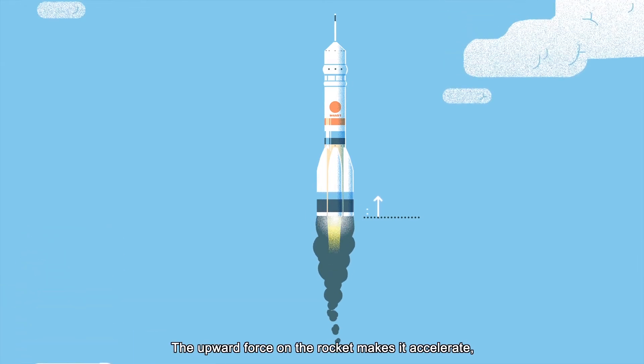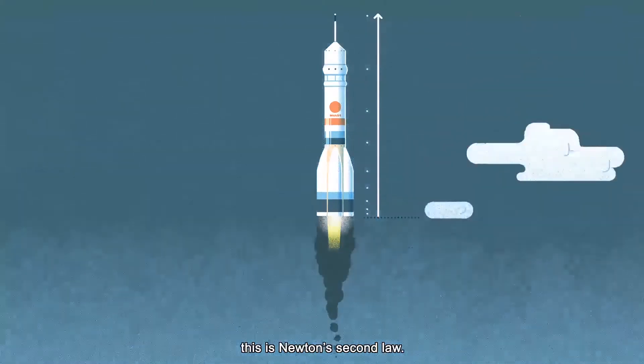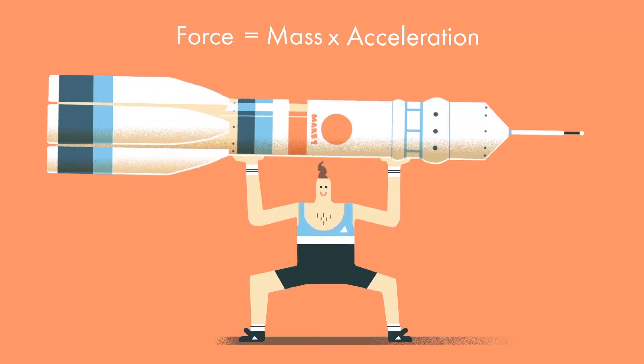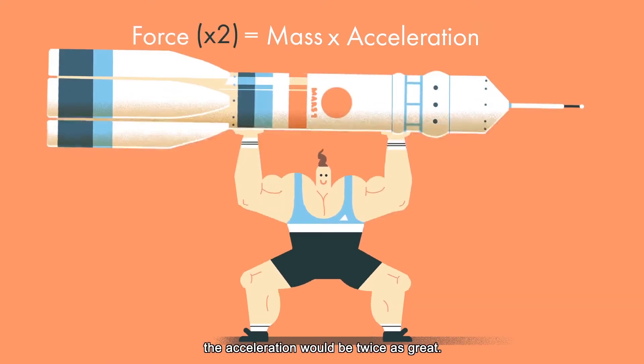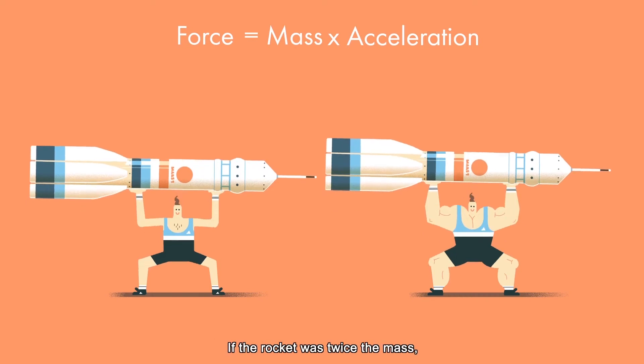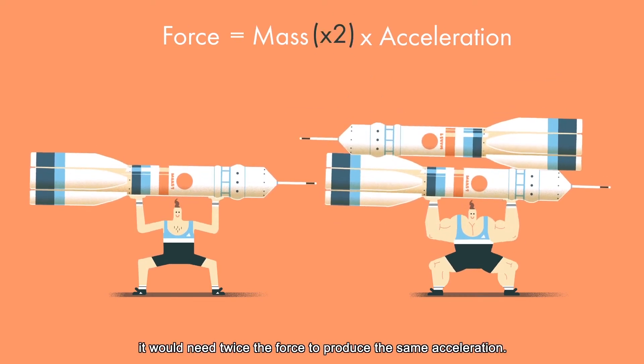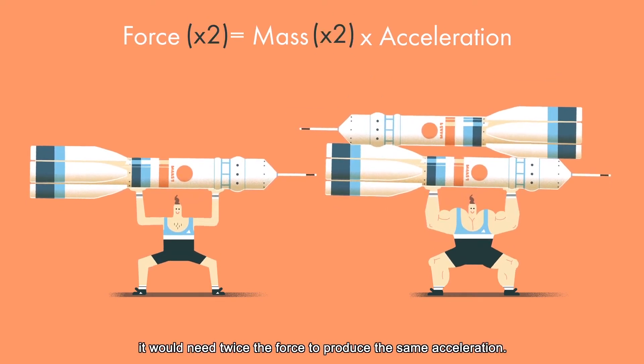The upward force on the rocket makes it accelerate. This is Newton's second law. If the force was twice as strong, the acceleration would be twice as great. If the rocket was twice the mass, it would need twice the force to produce the same acceleration.